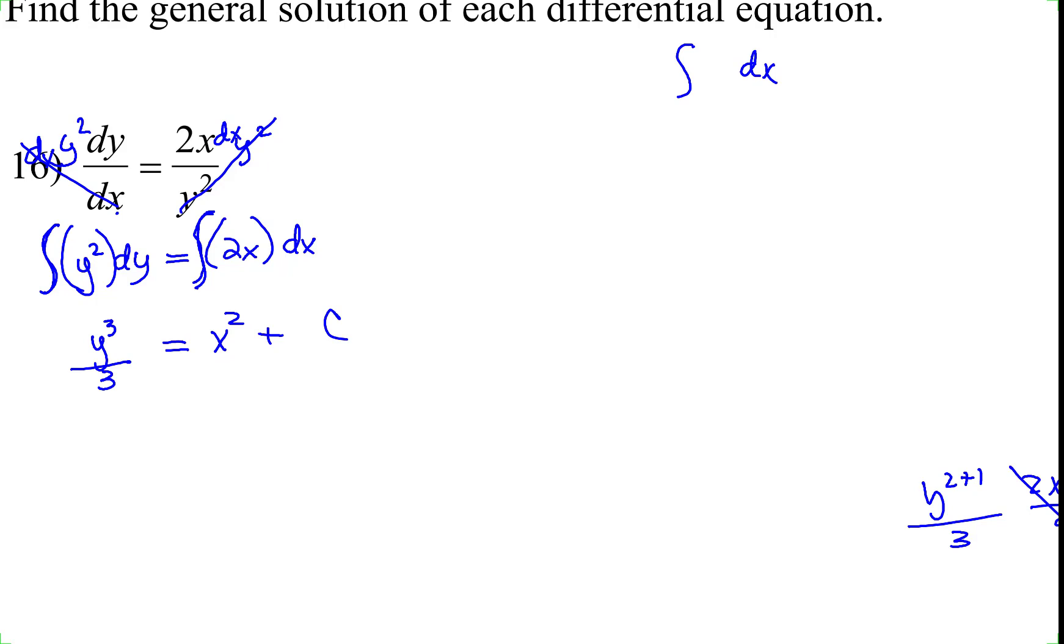We want to eventually get y by itself. First thing we're going to do is cancel this by multiplying both sides by 3. You could distribute the 3.